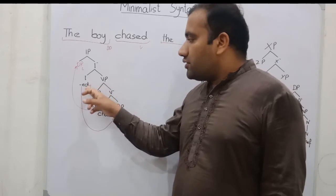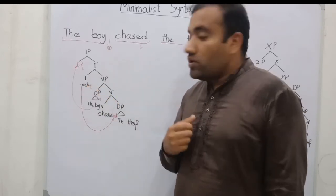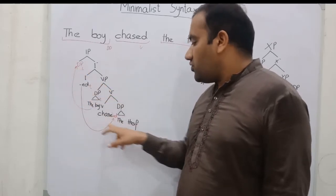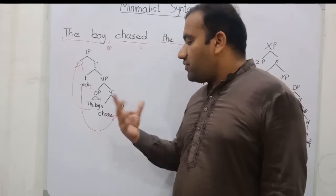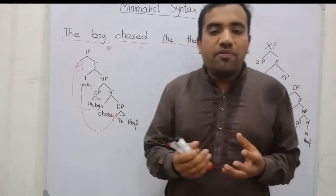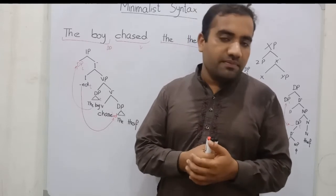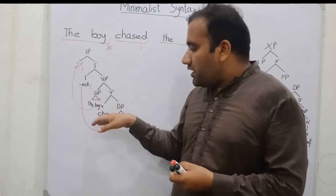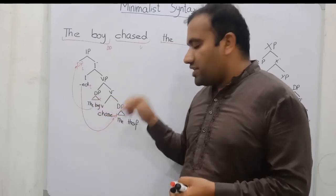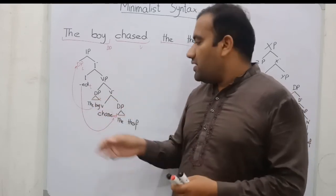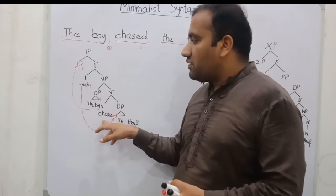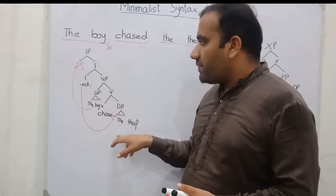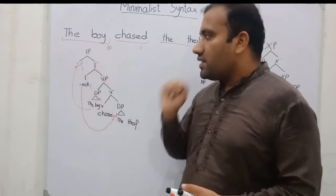So this sentence is wrong. We cannot produce the boy ED chase the thief. This is the word, and the word takes the inflection morpheme. So this ED will move covertly and it attaches to the chase. And in this way, it will become chase-d. Our sentence will be the boy chased the thief, and it will become the IP.